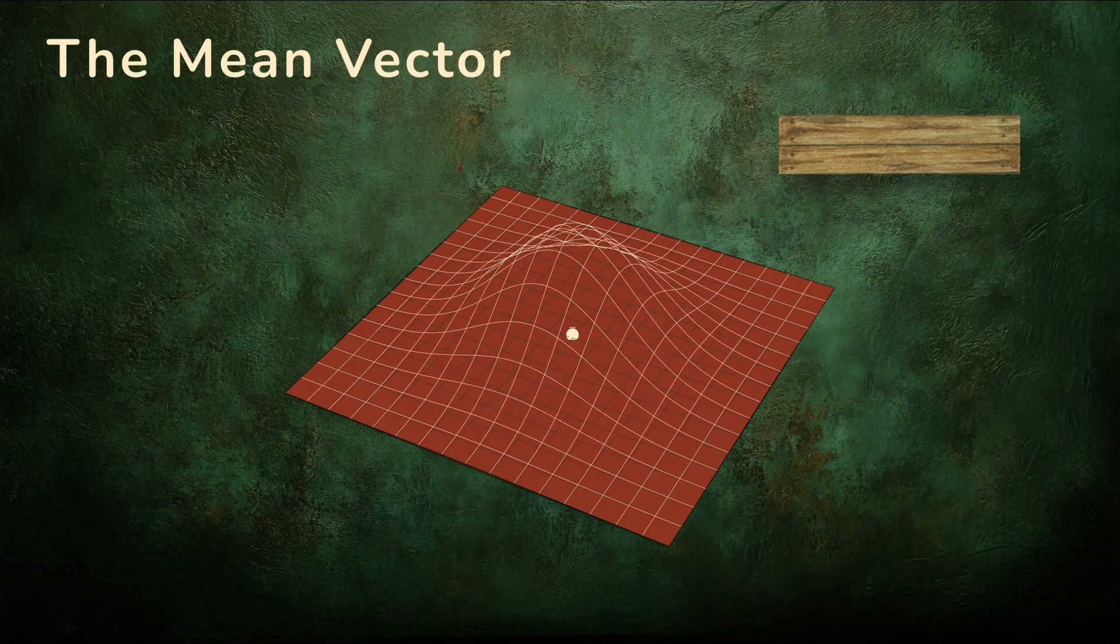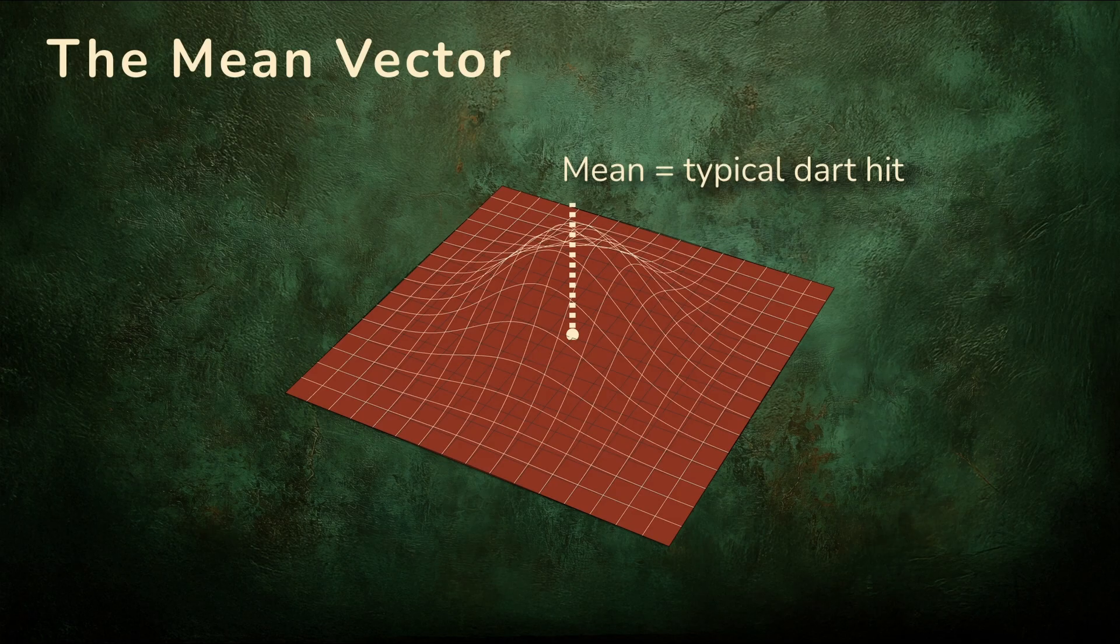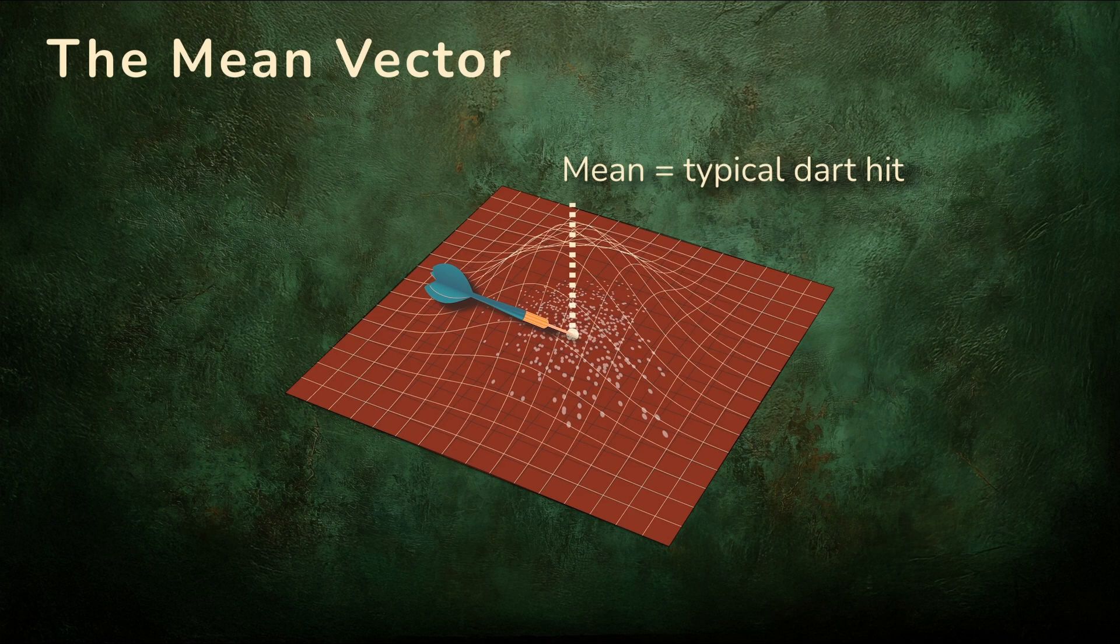Remember when we cut boards? The mean gave us the typical length. Here, the mean vector gives us the typical dart hit, the spot where throws tend to cluster. The mean vector is like our anchor in two dimensions, the reference point around which everything else is measured.